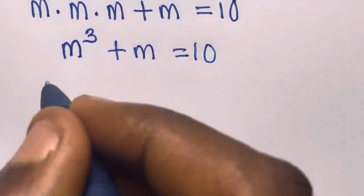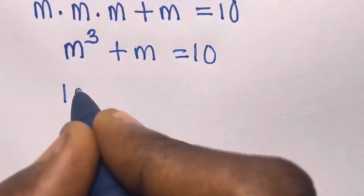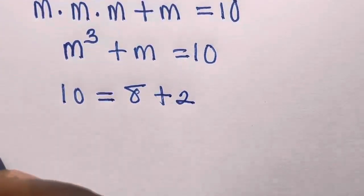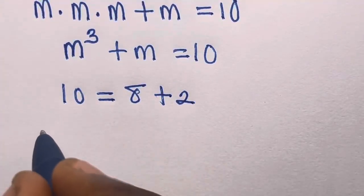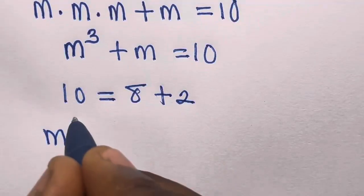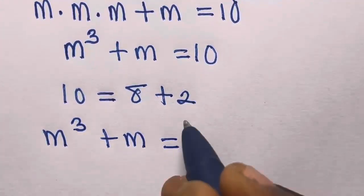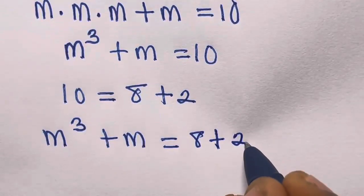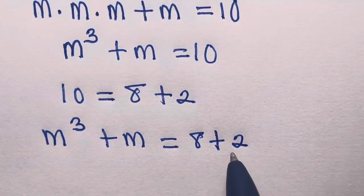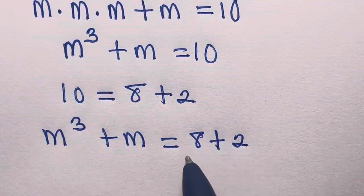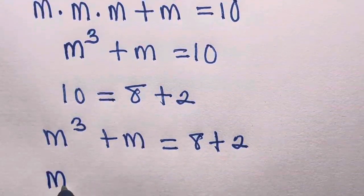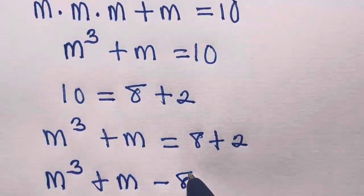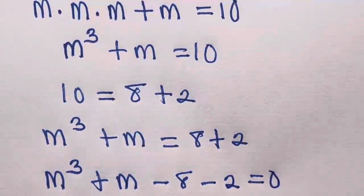Let's note that we can express 10 as the sum of 8 and 2. So we replace 10 with 8 plus 2. Then by transferring both terms to the left-hand side, we have M cubed minus 8 minus 2 equals 0.